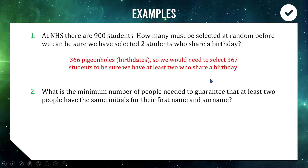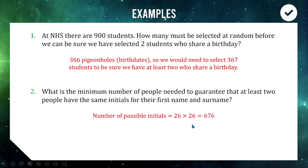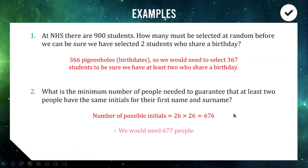So 366 dates means we need 367 students to be confident we have at least two matching. Question two: what is the minimum number of people needed to guarantee at least two share the same initials for first name and surname? Initials are two letters, so there are 26 times 26 possible combinations — 676 in total. That means if we select 677 people we have one extra pigeon beyond our 676 pigeonholes, guaranteeing at least two people share the same initials.